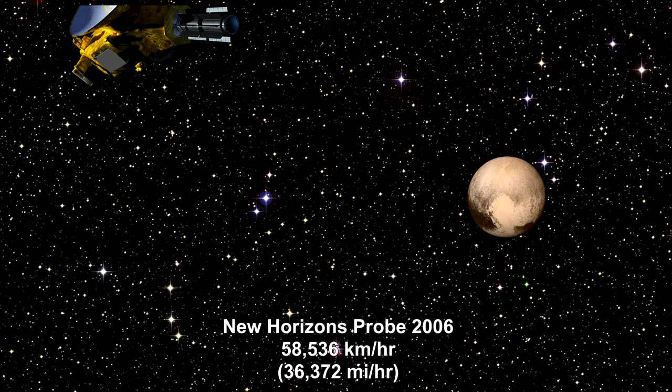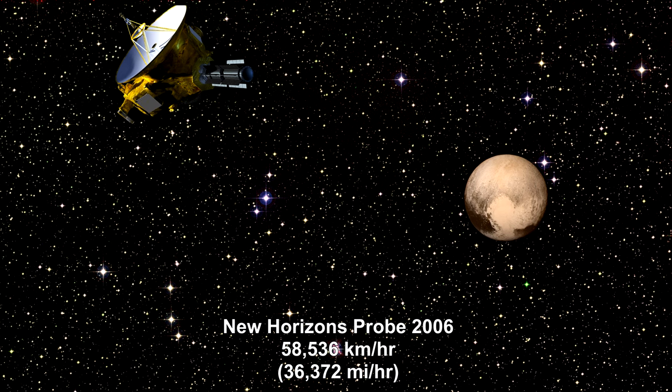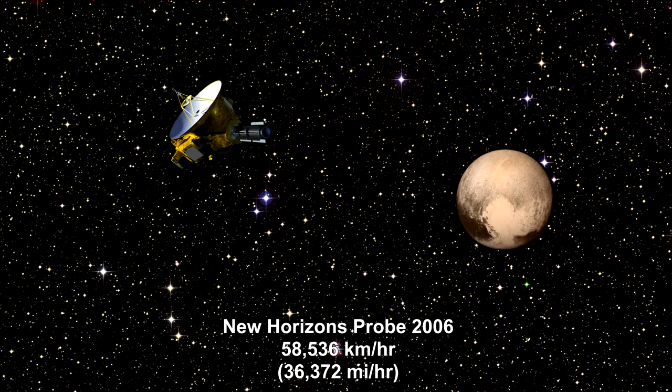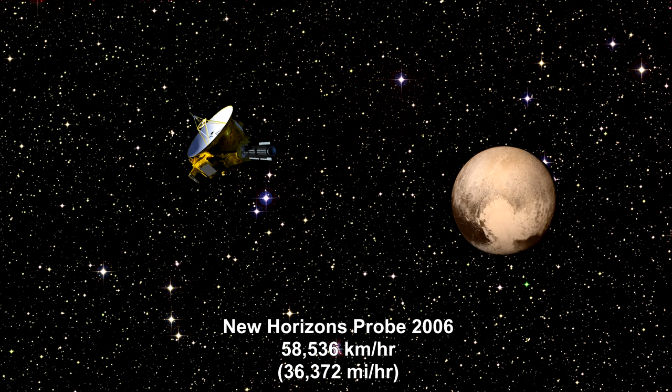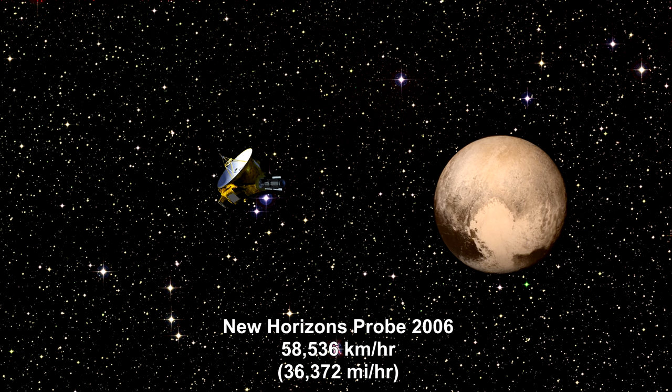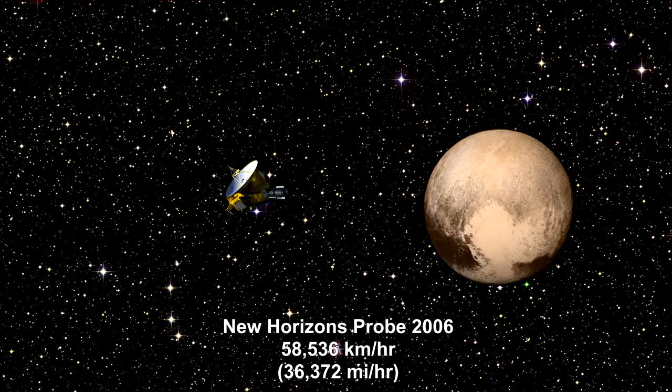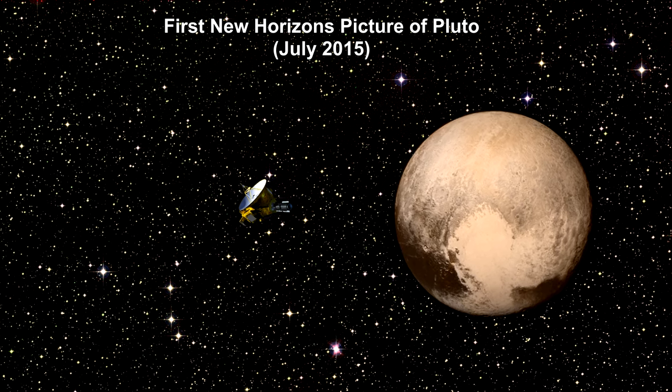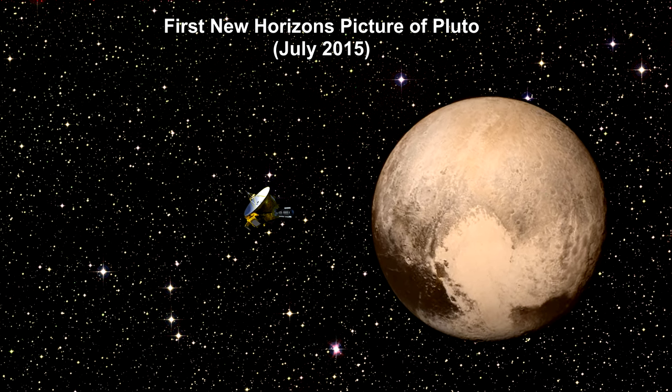The New Horizons spacecraft was launched in 2006, headed for Pluto. It is traveling at 58,536 km per hour. The record for unmanned spaceflight as measured relative to the Earth. It started sending back never-before-seen pictures of Pluto in July 2015.